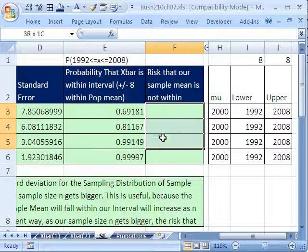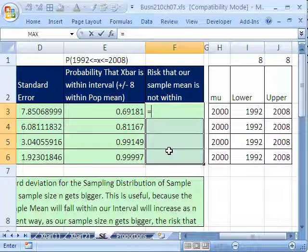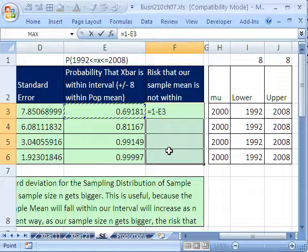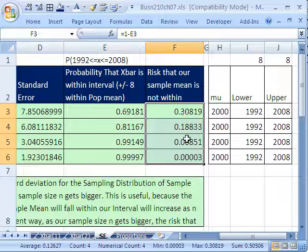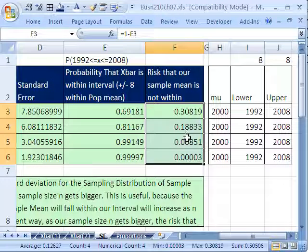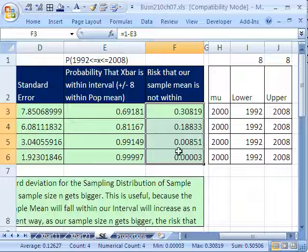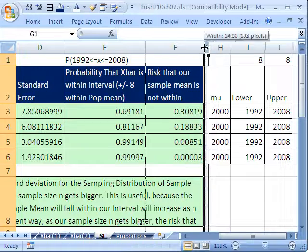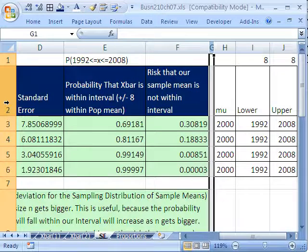Now, what is the 1 minus this equals 1 minus this? That's the probability that the sample mean will not be in your interval. Or it's the risk that our sample mean is not within our interval. I think I need to double click that. Yeah, there we go.